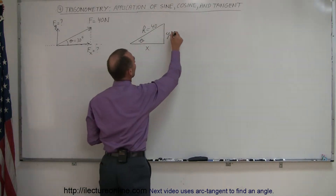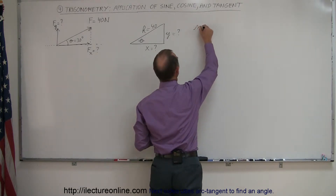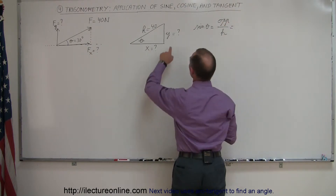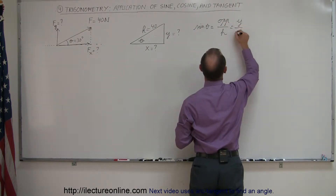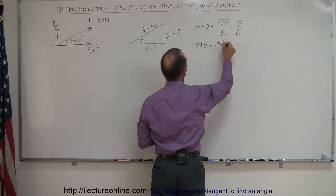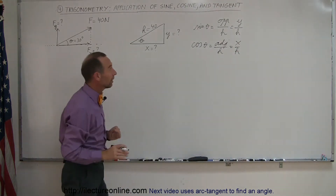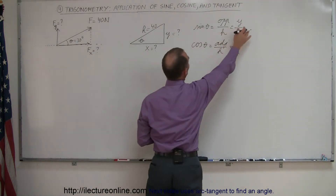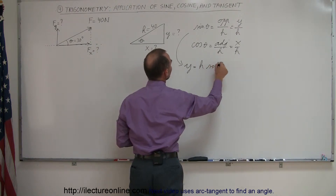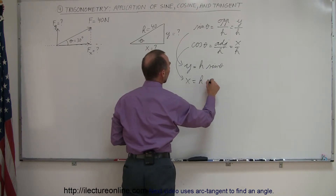We're trying to find what y and x are equal to. By definition, the sine of angle theta equals the opposite side over the hypotenuse — in this case, y over h. The cosine of theta equals the adjacent side divided by the hypotenuse, so that's x over h. Solving for y gives us y equals the hypotenuse times the sine of theta, and x equals h times the cosine of theta.